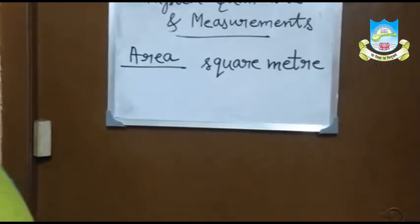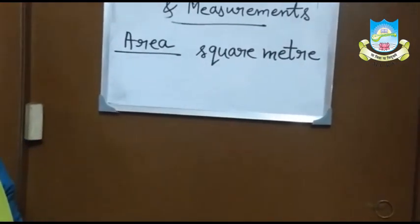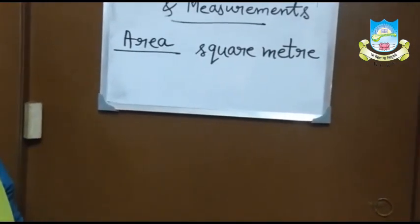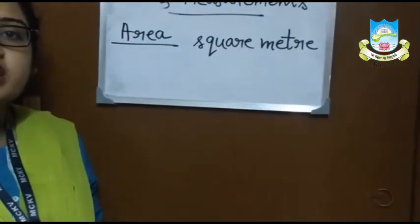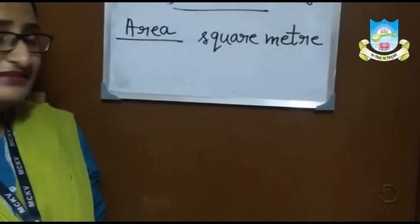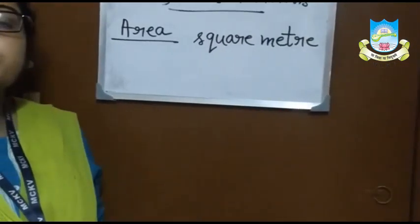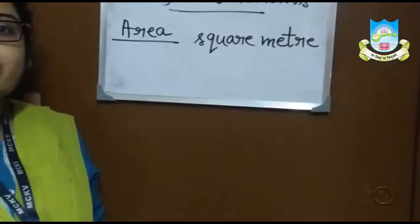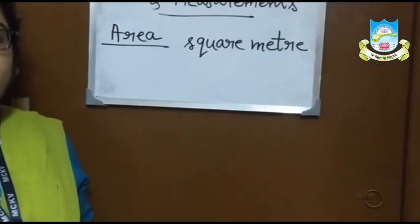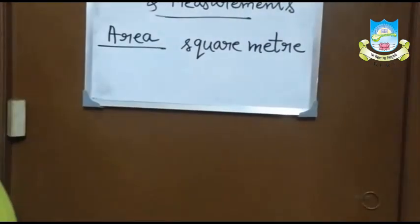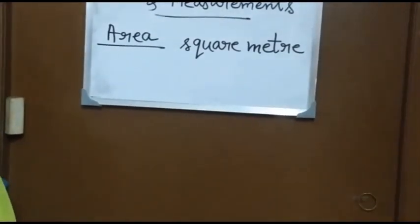In this video we will discuss about area, speed, and density. Area is the surface occupied by an object. The SI unit of area is square meter. The multiples of this SI unit are square kilometer, hectare, are, etc. And the submultiples are square centimeter, square millimeter, etc.